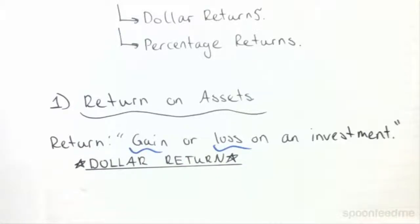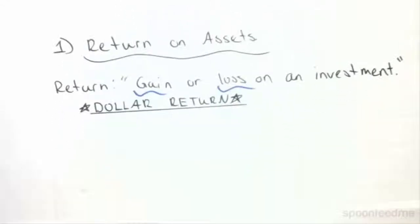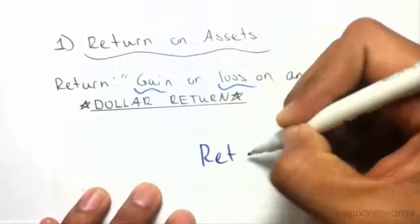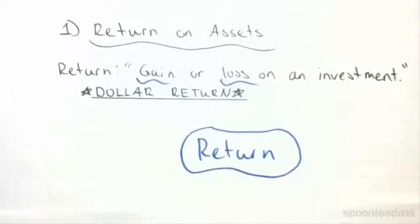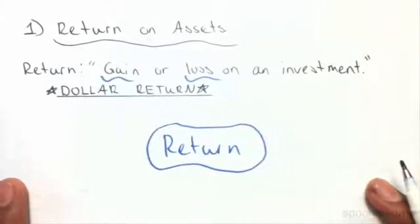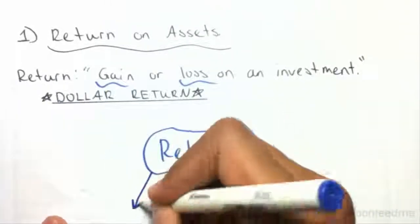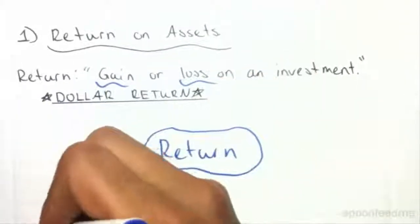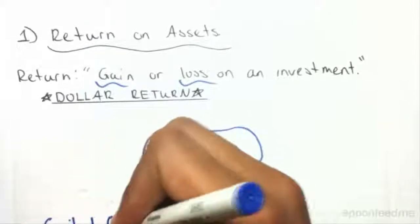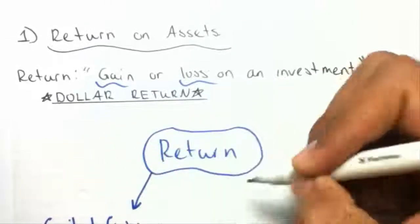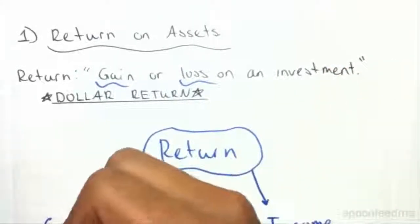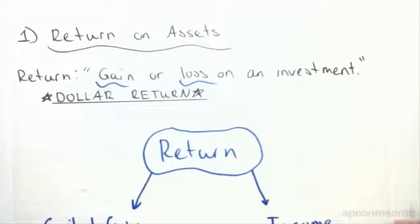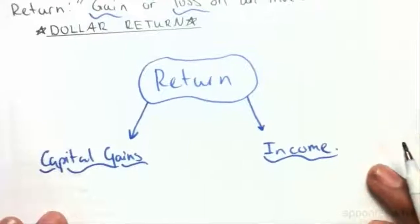Let's first start by looking at what dollar return is. Let's say we have this closed contour right here and this represents our return. But this return is made up of two things: something known as capital gains and also something known as income. So these are the two primary constituents of our return.